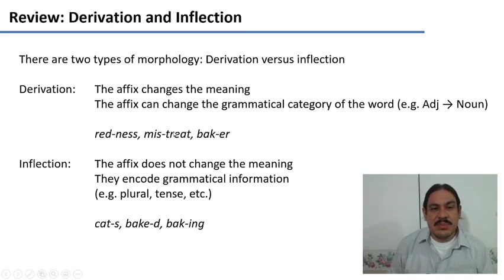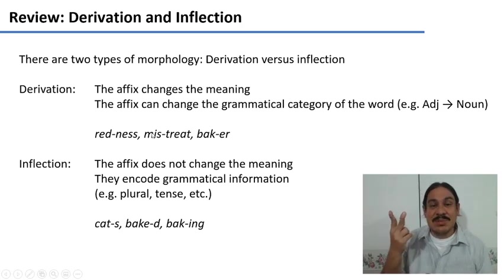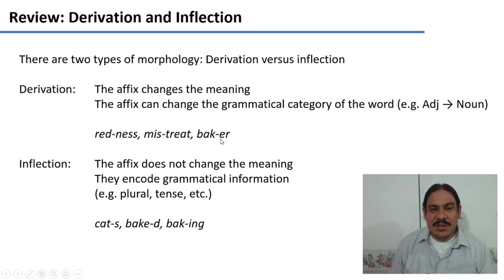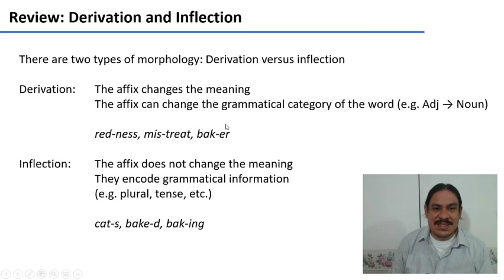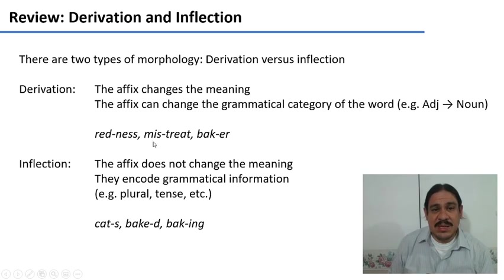In the word 'mistreat,' we have the root 'treat' and then the prefix 'mis-' changes the meaning from positive to negative. In 'baker,' we have a derivational suffix which turns this action — the action of applying heat to bread — into the person who applies heat to bread: 'baker.' So derivational affixes change the meaning of the root.